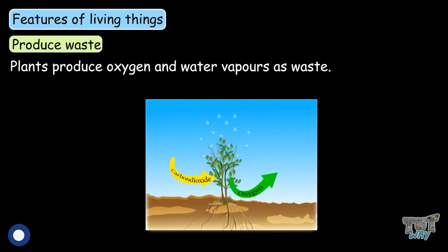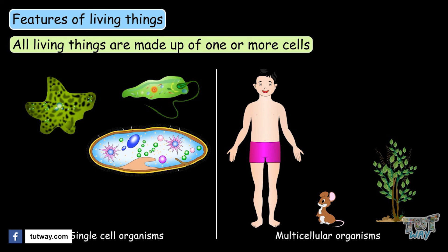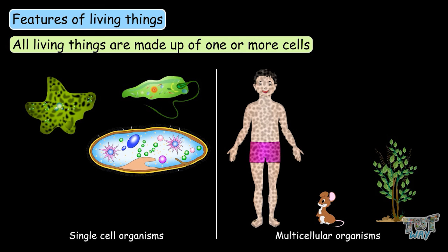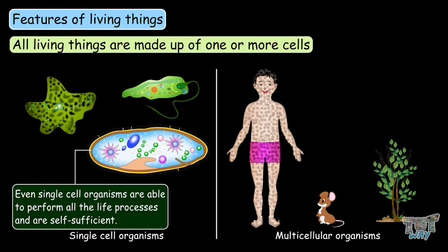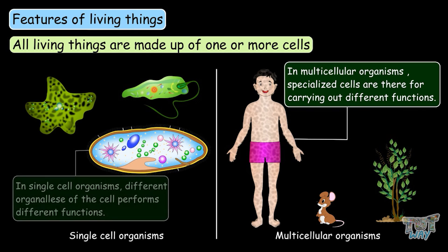An important characteristic of living things is that all living things are made up of at least one cell — they are composed of only one or more cells. Some are made up of only one cell and some are made up of many cells. Even single-celled organisms are able to perform all the life processes and are self-sufficient. In multicellular organisms, specialized cells carry out different functions, while in single-celled organisms, different organelles of the cell perform different functions.